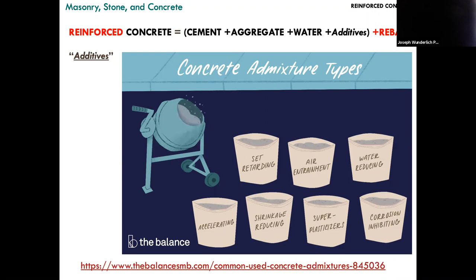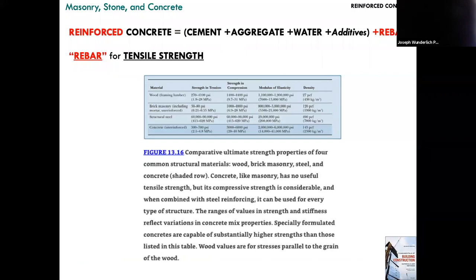You can click on the link below — whenever you see a link in this lecture series it means it's something worth drilling down into. There's also a table from the course textbook comparing wood, brick masonry, steel, and concrete — looking at tensile strength, compressive strength, modulus of elasticity, and density. The two most important are tensile and compressive strength, though modulus of elasticity is important for deflections.